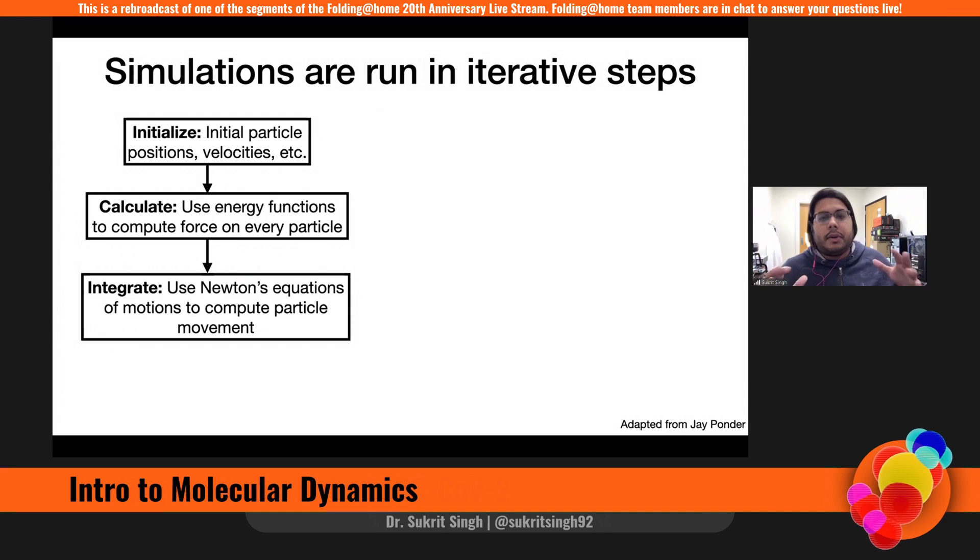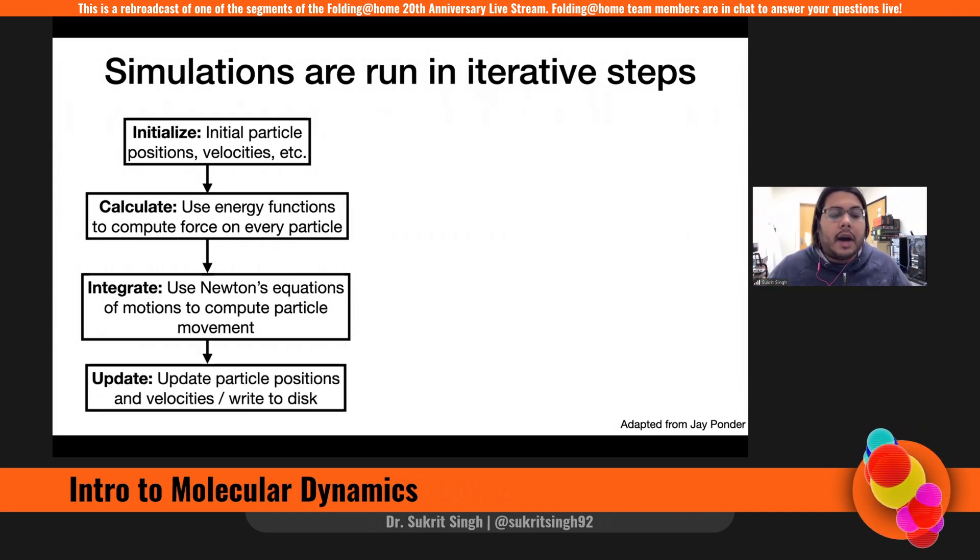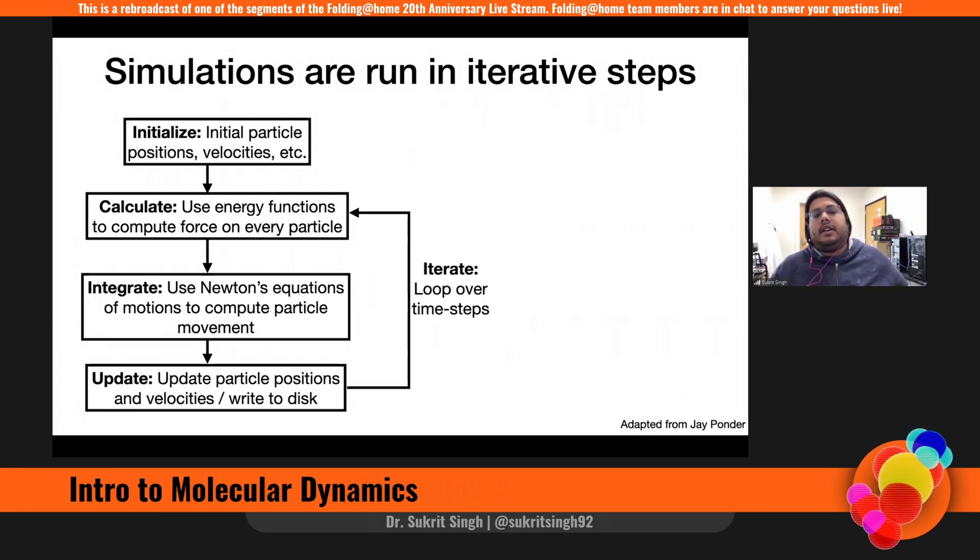So just applying F equals ma for those physicists out there and then updating. So we just move the atoms according to Newton's laws of motion and save that update. And we just do that over and over again. And this represents this loop is just how we compute a single frame of this MD simulation. And running a certain number of this loop will generate a single work unit.